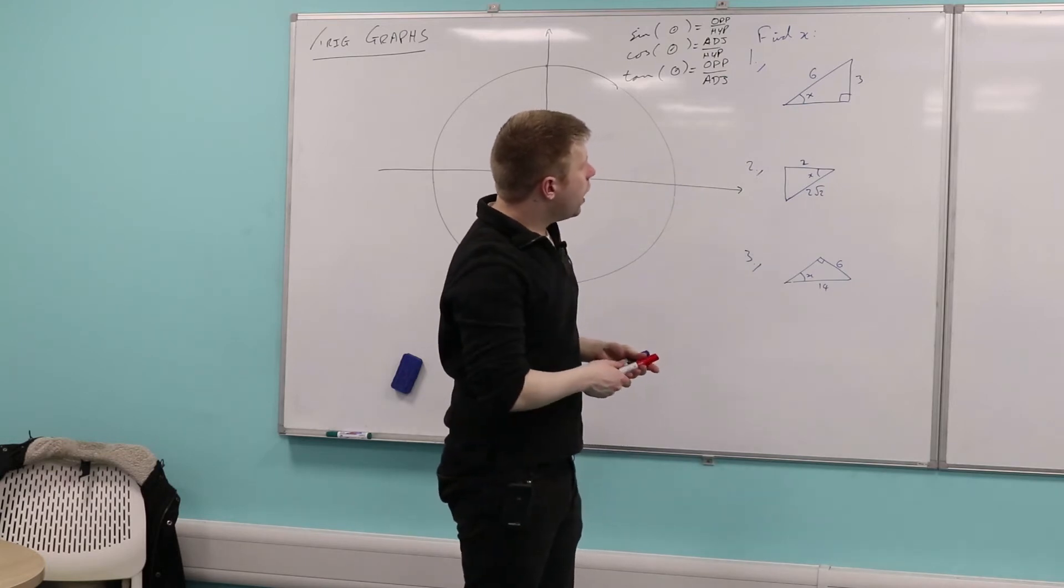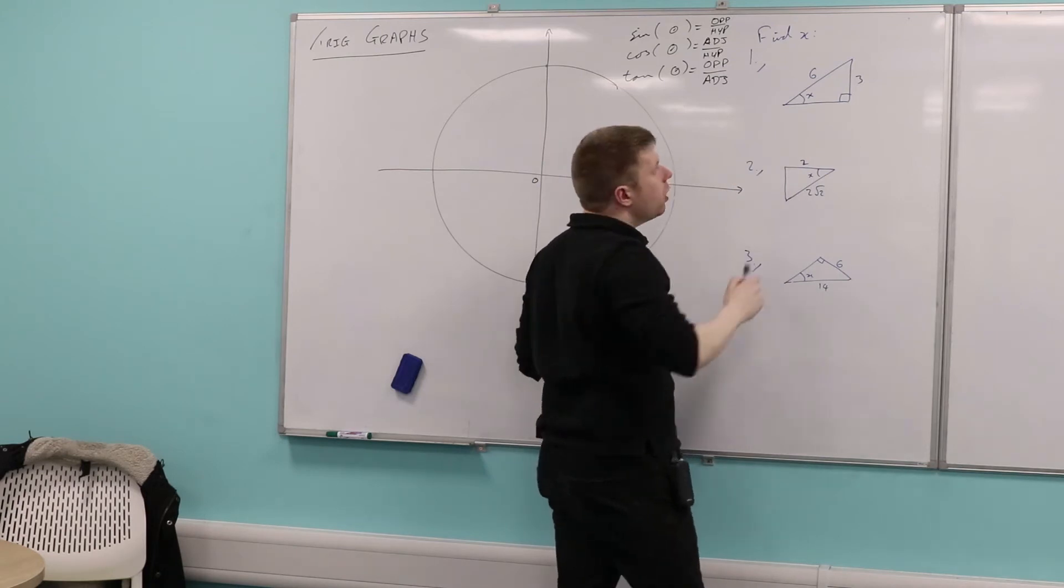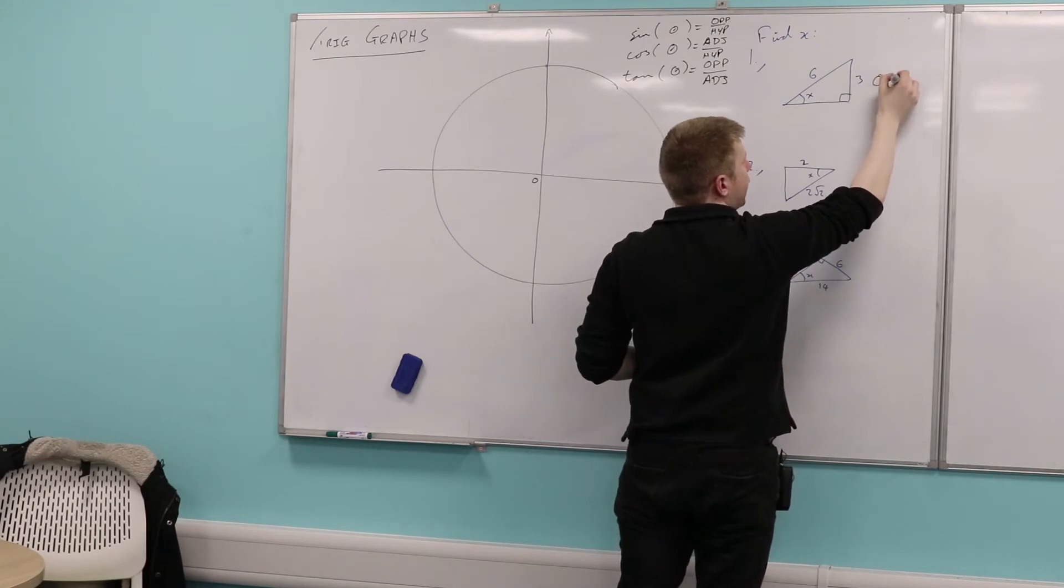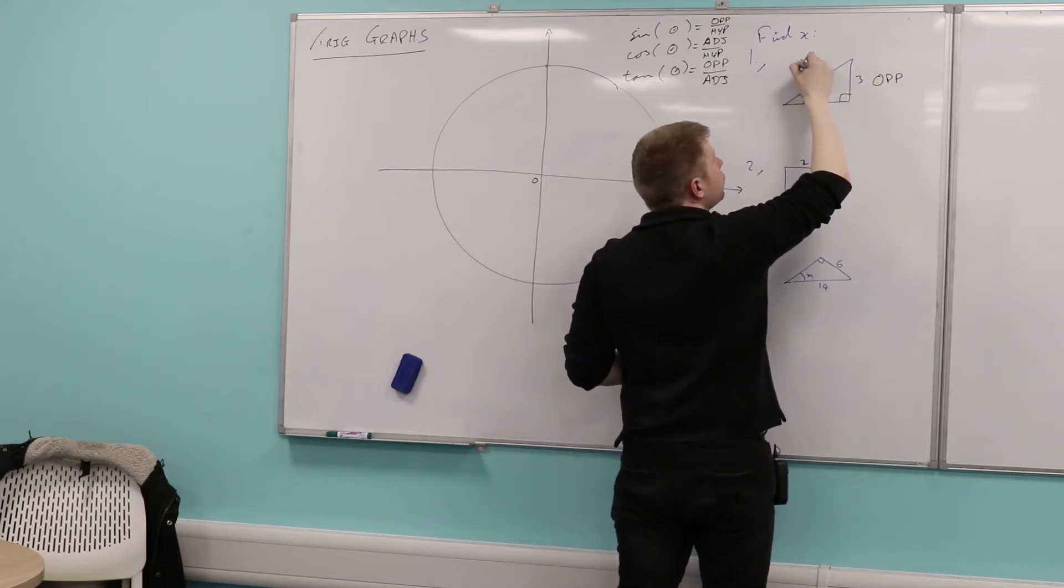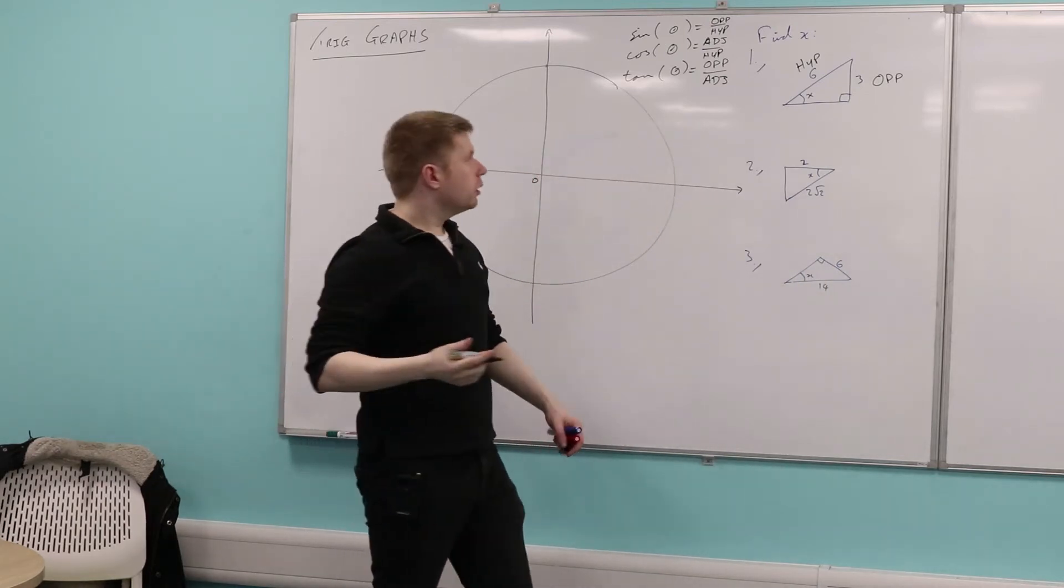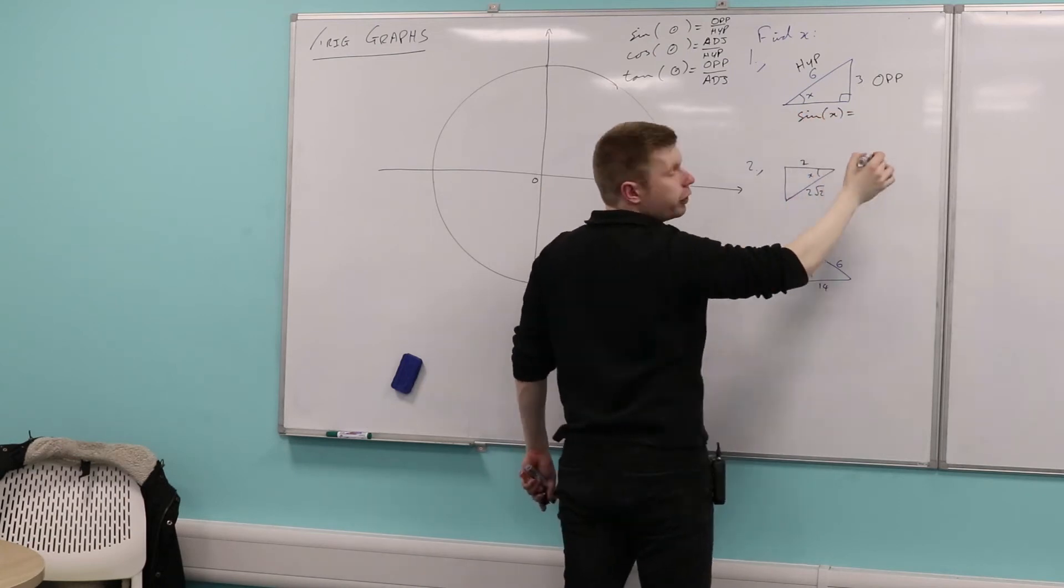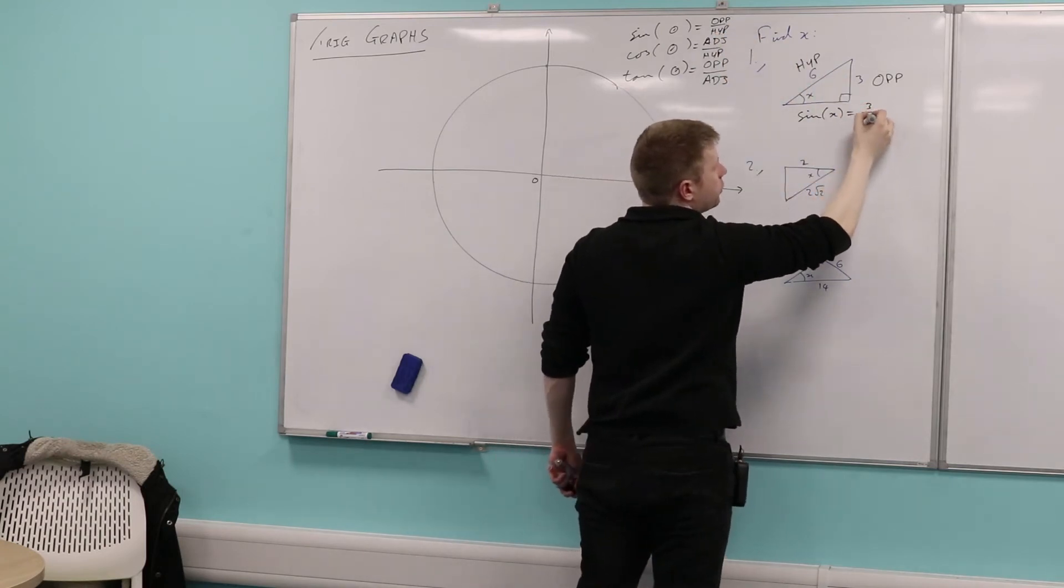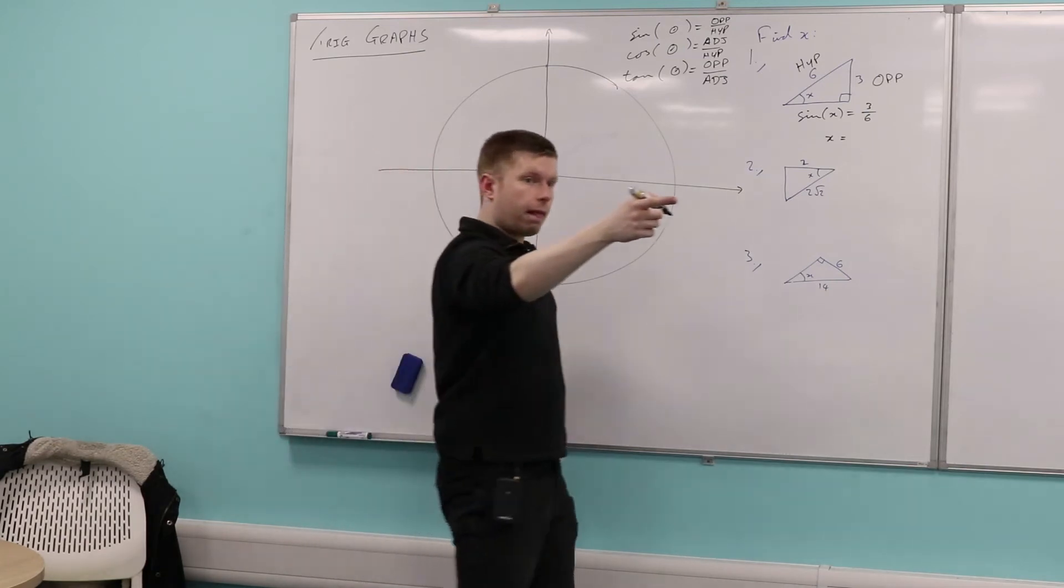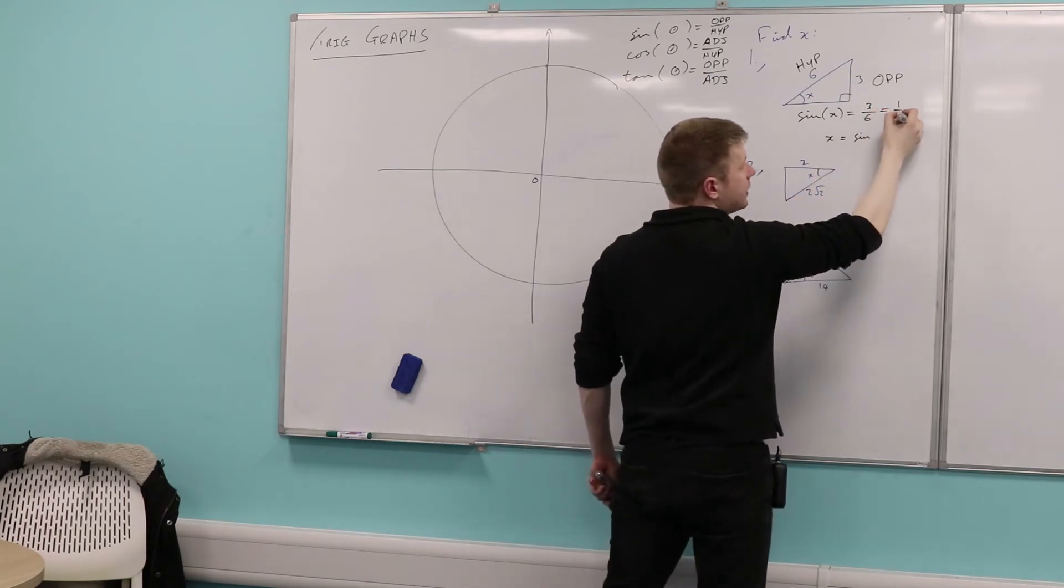Okay, so let's have a look at question one. I guess first things first, we need to label the sides. So this is the angle which I'm interested in. What side would this be? Perfect. The opposite. What side would the six be? The hypotenuse. In which case, which ratio would we be using? Perfect. Yeah, good. So sine would be the ratio. Sine of the angle would be equal to? Perfect. Opposite over hypotenuse. How do we find x, then?